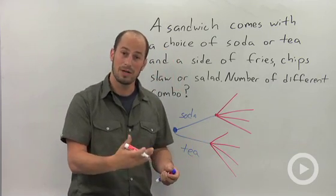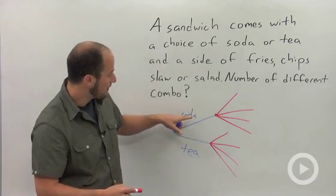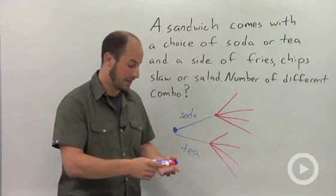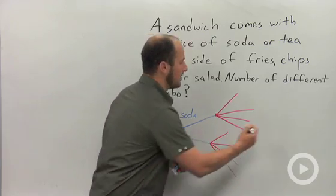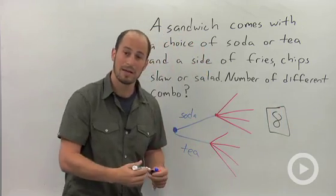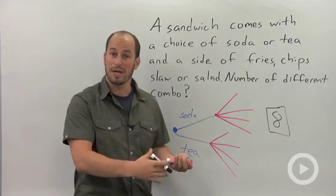And then all we have to do once we go through all those things is count the number of endpoints that we have. So with our soda, there were four different options we could get. With our tea, there were four different options that we could get for a total of eight different things. So, in general, the tree diagram is a good way to sort of start organizing your data.